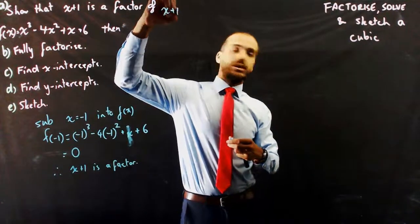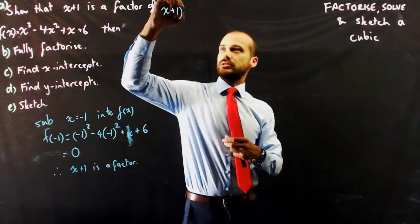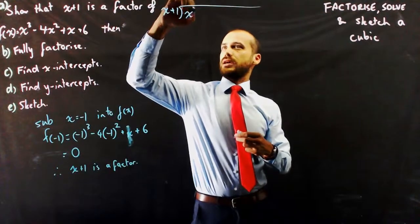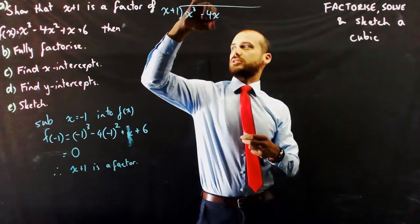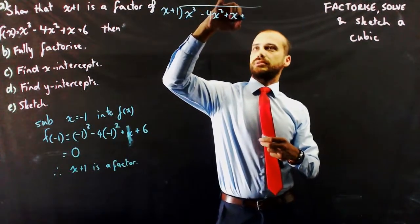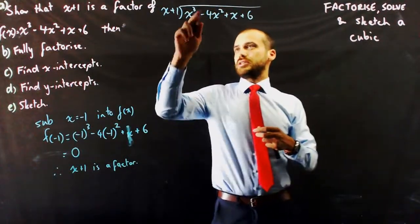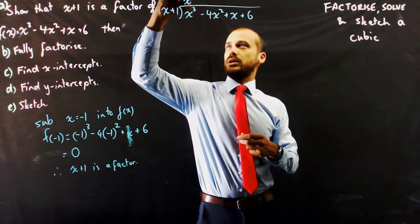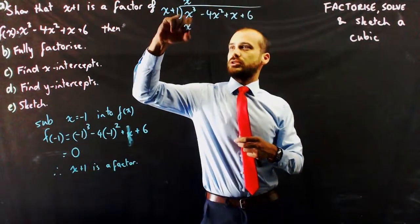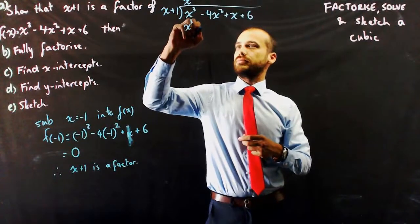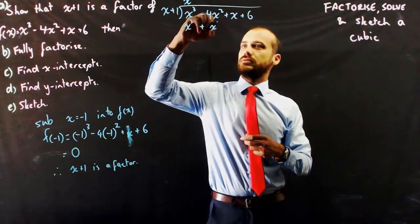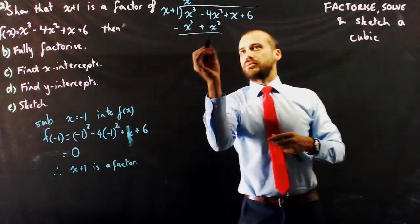So, x plus 1, make sure I'm not falling off your screen. x cubed minus 4x squared plus x plus 6. If you feel confident, you can just fast forward through this part of the video. x cubed divided by x is x squared. x squared times x is x cubed. x squared times 1 is x squared. Subtract one from the other.